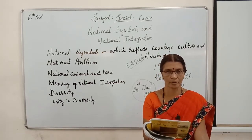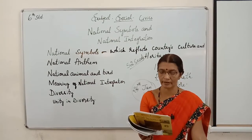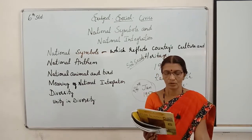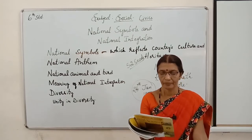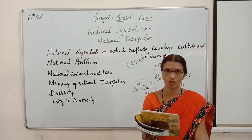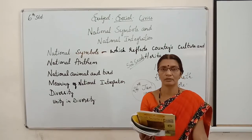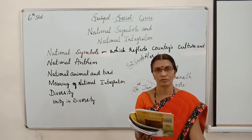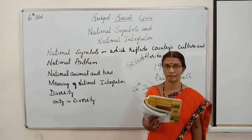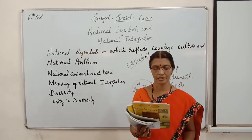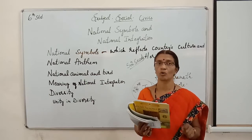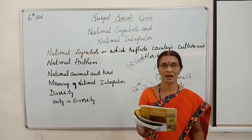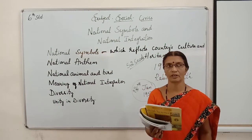The flag has a rectangular shape. Its length and breadth are in the ratio of 3 is to 2. The three colour stripes — saffron, white, and green — are in equal proportion. The cloth of the flag can be either cotton or silk. In addition, it should be hand-woven, not made by machine, and its thread must be hand-spun.